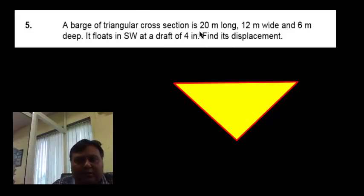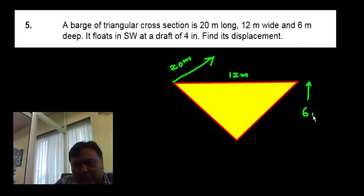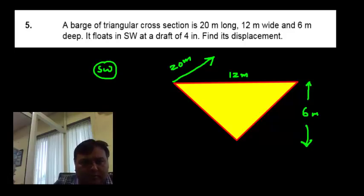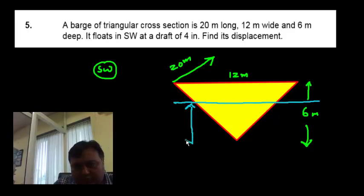A barge of triangular cross section is 20 meter long, 12 meter wide and 6 meter deep. So here, let me do the marking - suppose this is length and the barge is 20 meter long, 12 meter wide, so this is 12 meter and 6 meter deep, so let me mark here this is 6 meter. Now it floats in salt water, so this is the water line and this draft is 4 meter. We need to find the displacement in salt water.